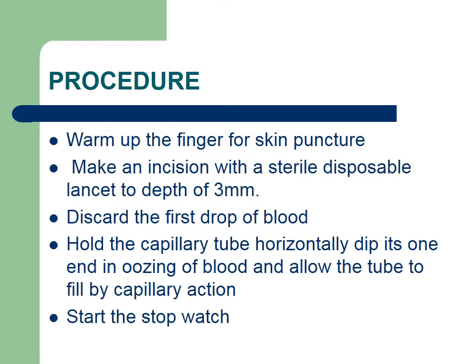Let's start the procedure. First, introduce yourself to your patient, take consent, and briefly explain the procedure. Then clean the fingertip with an alcohol swab and make a sharp incision of 3 mm with the disposable lancet. Discard the first drop of blood, then hold the capillary tube horizontally and dip one end into the oozing blood. Allow the tube to fill by capillary action, then start the stopwatch.